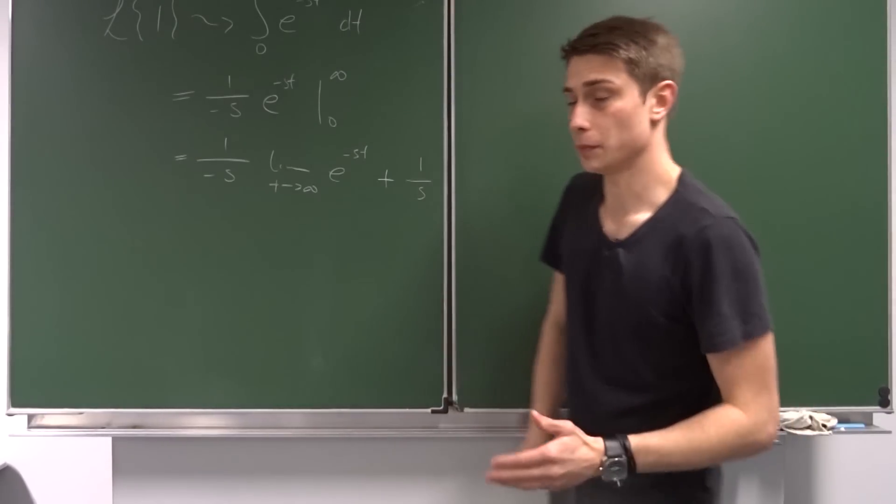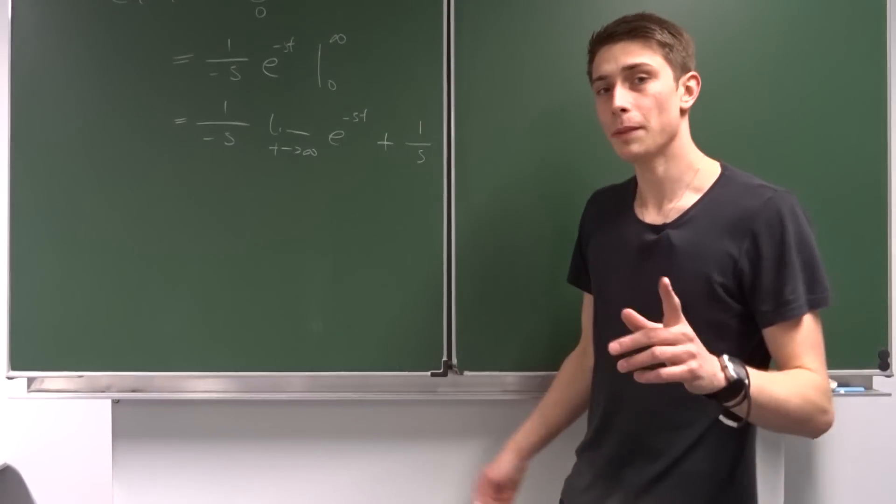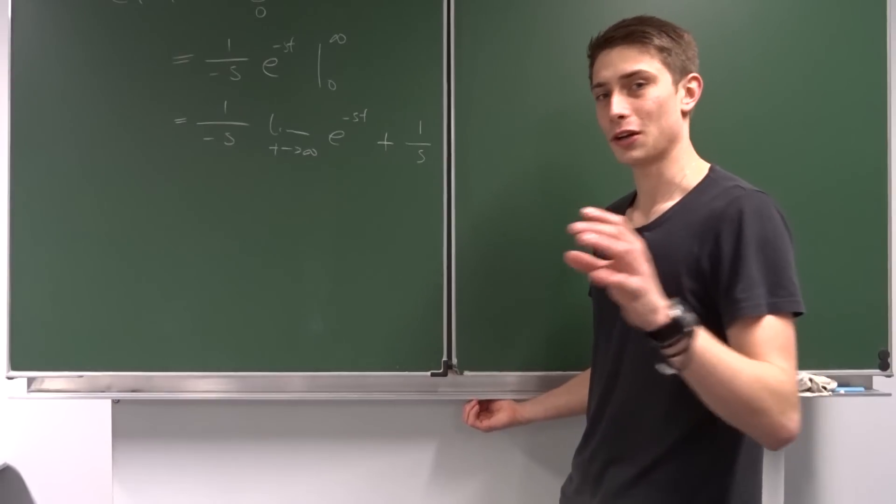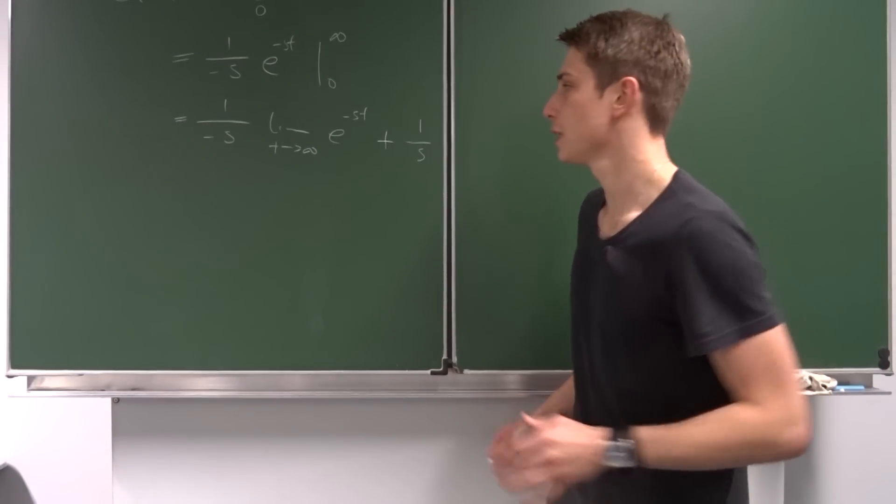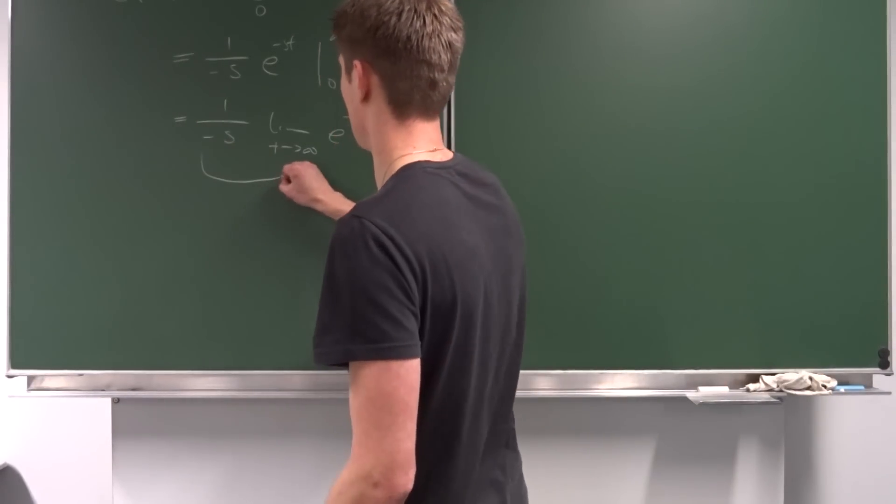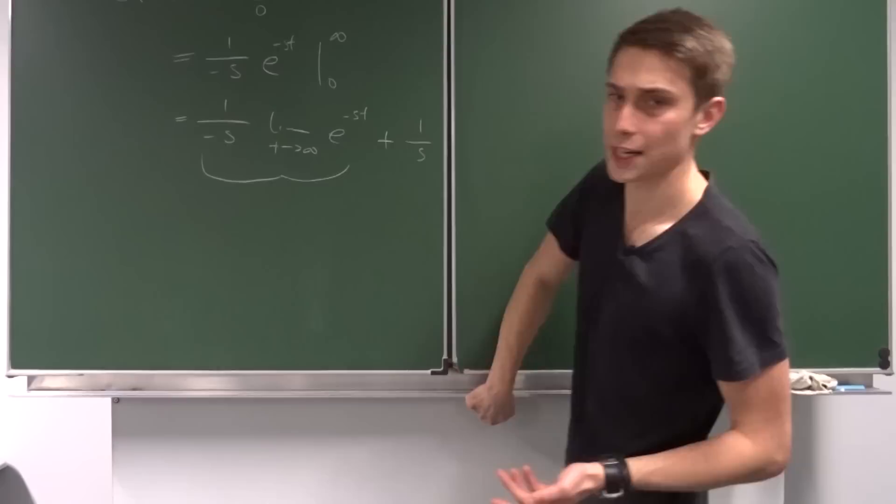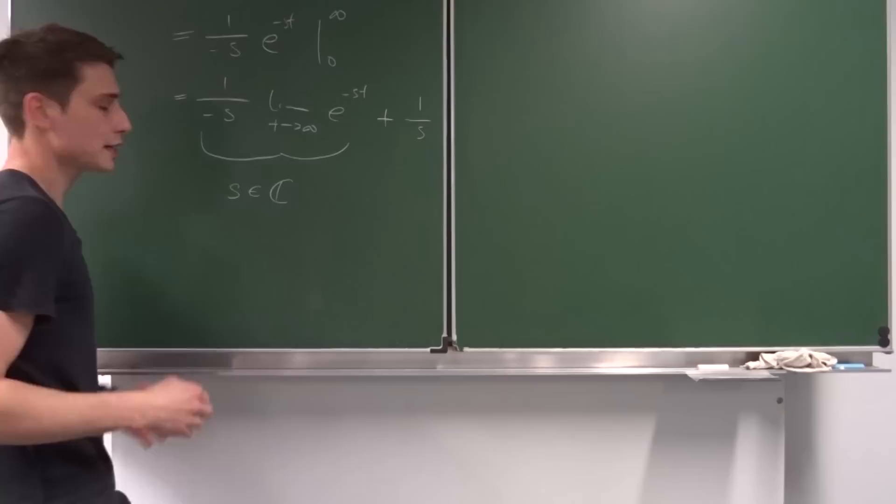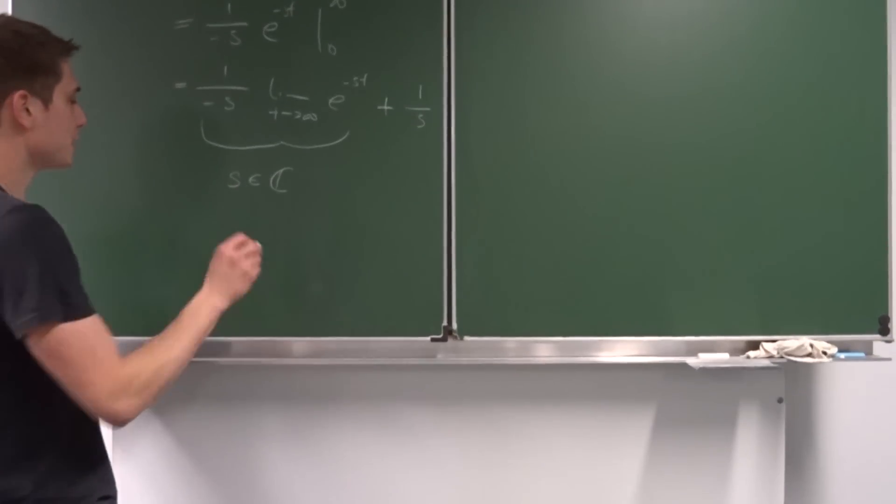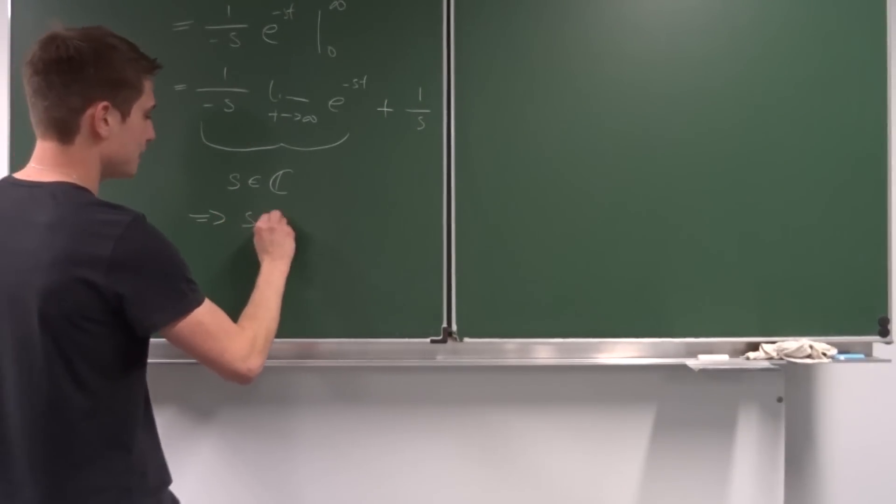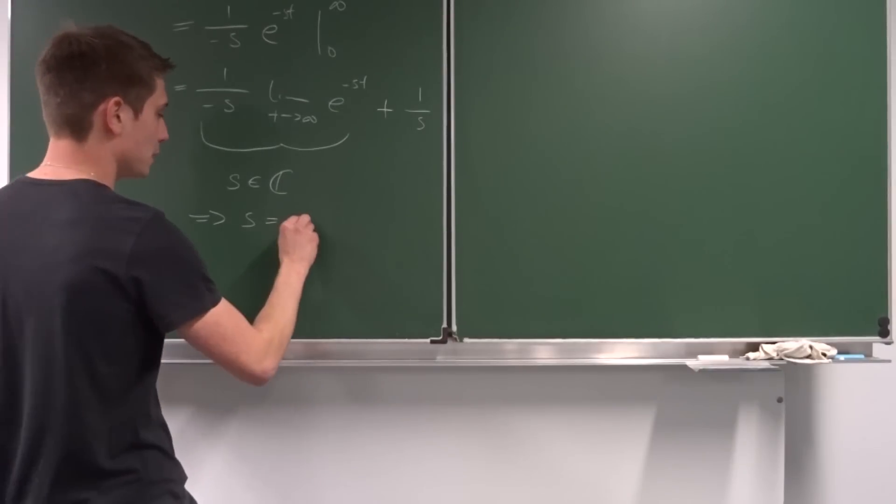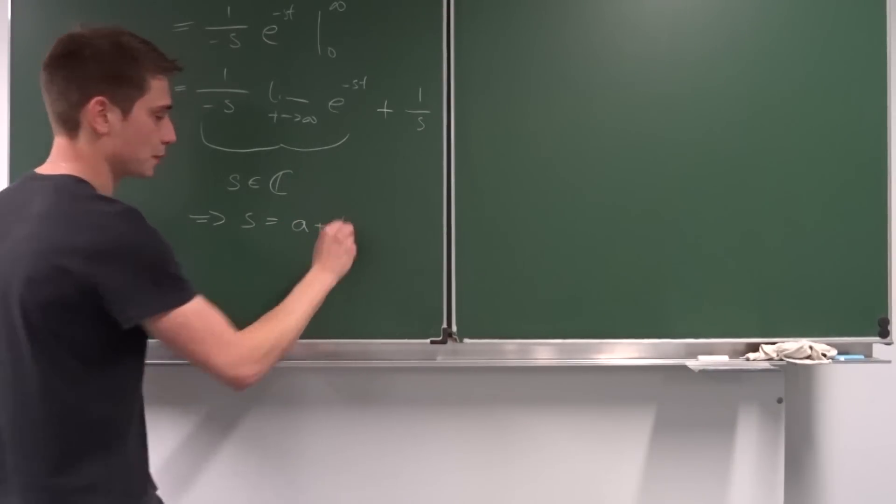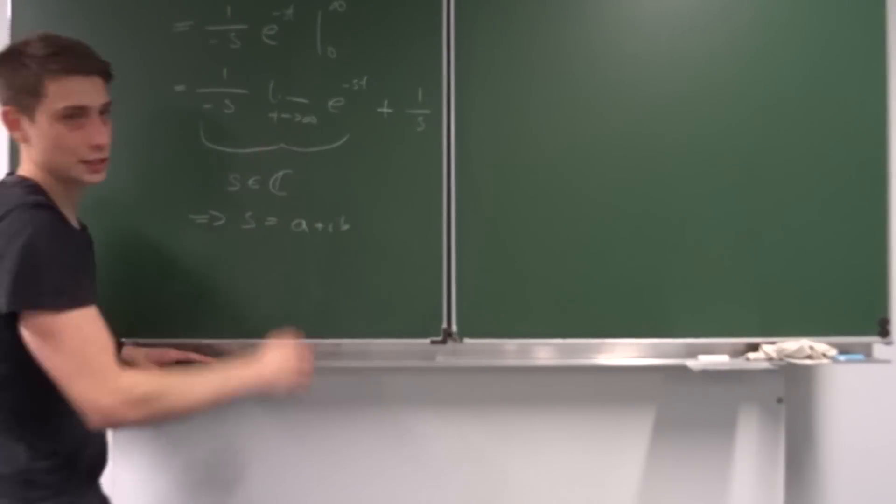So why do we just care about the real part of s? Remember, it's all about complex numbers in this case. We're taking a look at this part right here. Since s is an element of the complex numbers, we can write s in a different way: s equals some complex number a plus i times b. Now we can plug this in here.